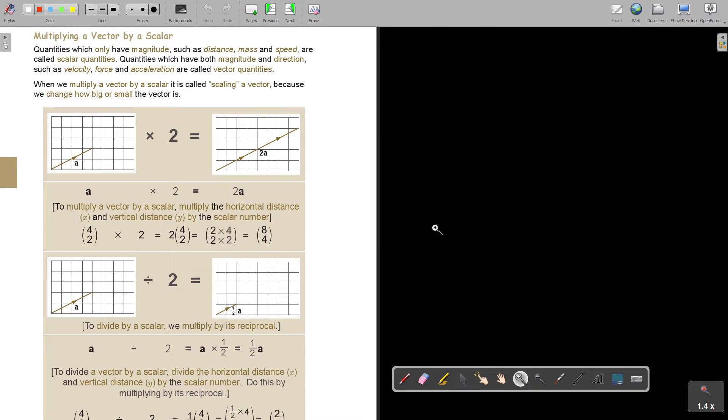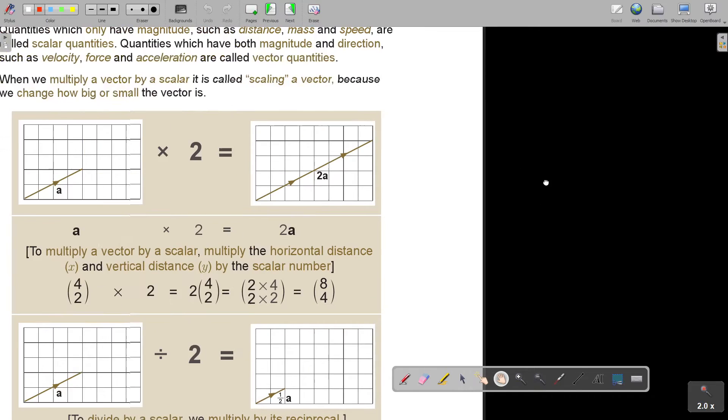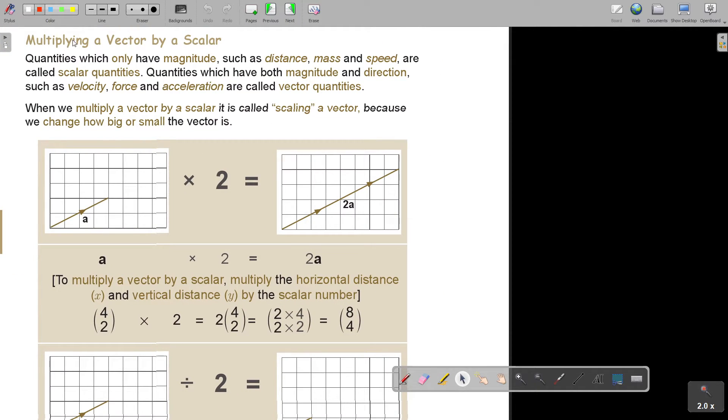And now, multiply a vector by a scalar. Quantities which only have magnitude, such as distance, mass, speed, are called scalar quantities. Quantities which have both magnitude and direction, such as velocity, force, acceleration, are called vector quantities. When we multiply a vector by a scalar, it's called scaling a vector, because we change how big or small the vector is. So if I multiply this with 2, it becomes twice as long. To multiply a vector by a scalar, multiply the horizontal distance X and the vertical distance Y by the scalar.